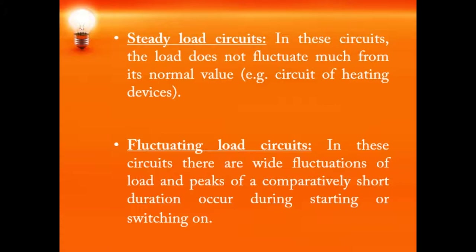Fluctuating load is where the load has very large fluctuations — wide variation in the load — and this especially occurs in the case of motors, transformers, capacitors, and fluorescent lighting. The main criteria for selecting a fuse for a fluctuating load is that the fuse should not blow out under transient conditions. We need to select a fuse whose time-current characteristics are much above the transient current characteristics of the load.